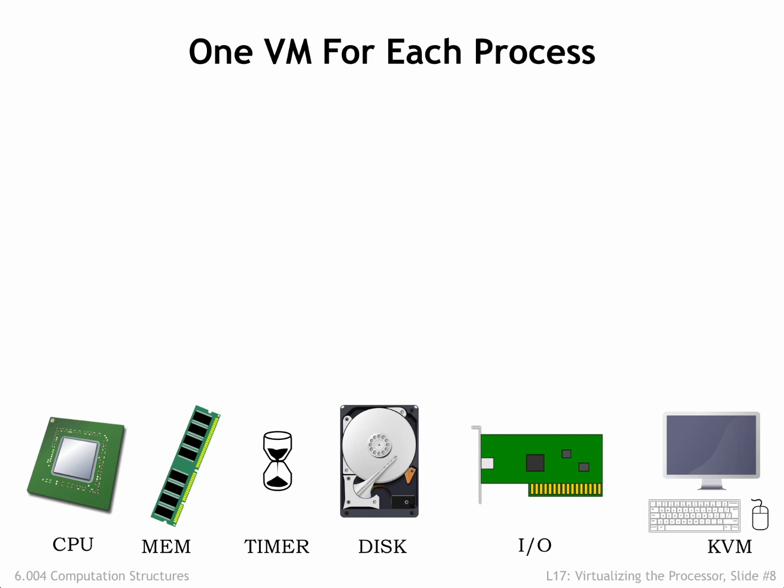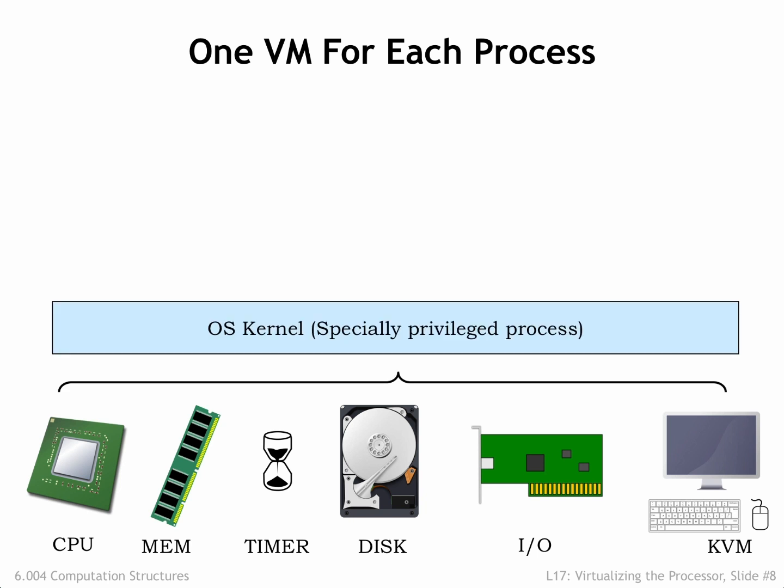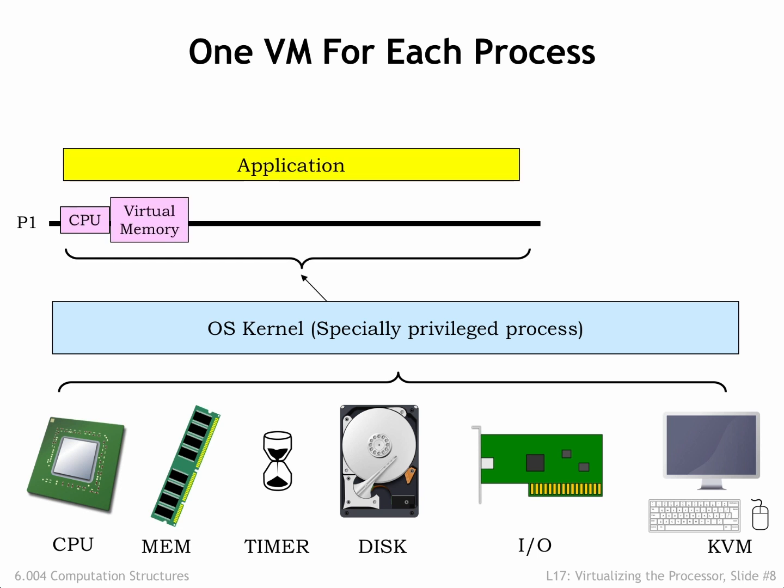Cameras and microphones are becoming increasingly important as the next generation of user interface. The physical machine is managed by the OS running in the privileged kernel context. The OS handles the low-level interfaces to the peripherals, initializes and manages the MMU contexts, and it is the OS that creates the virtual machine seen by each process.